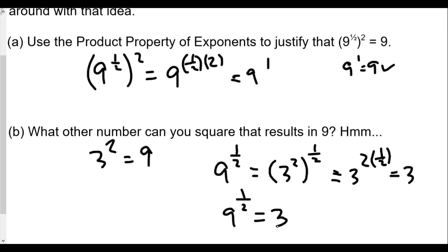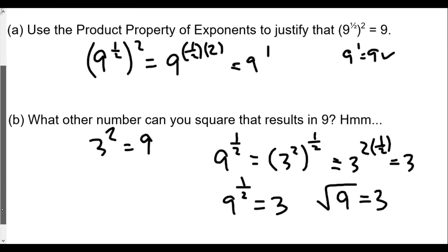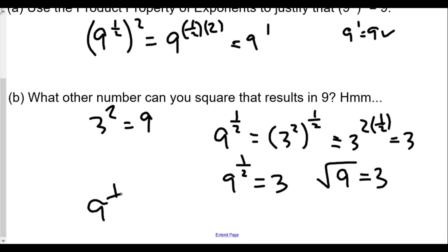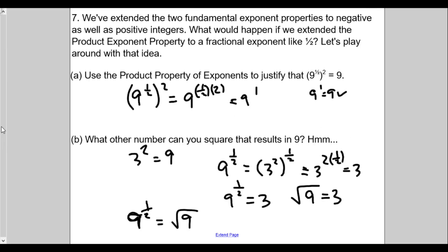What other operation could give us three from nine? If you were thinking square roots, you're on the right track. The square root of nine equals three. Since nine to the one half equals three and the square root of nine equals three, that means nine to the one half power equals the square root of nine. This leads us into our next lesson on fractional exponents — specifically how fractional exponents connect with radicals.